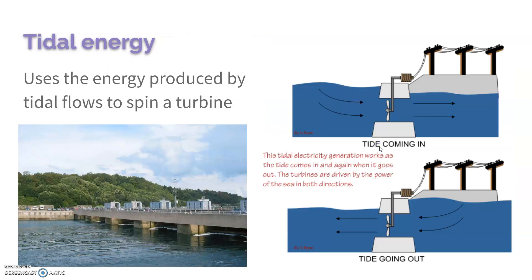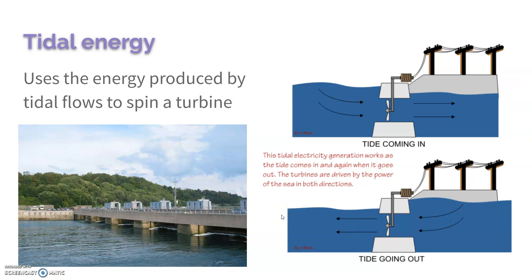Tidal energy is another type of hydropower. It uses the natural ebb and flow of the water — as the water flows in, it goes past a turbine, and as it flows back out it goes past that same turbine. The turbines can spin in both directions, causing the generator to spin and create electricity.